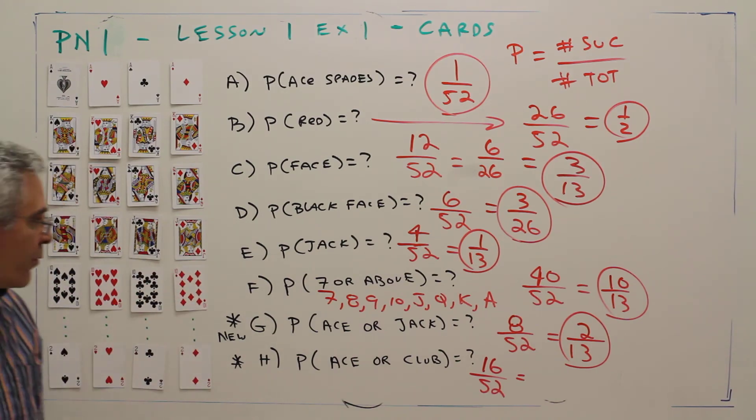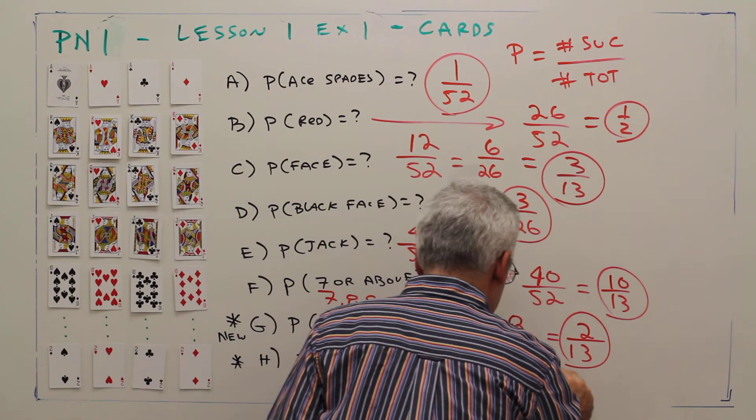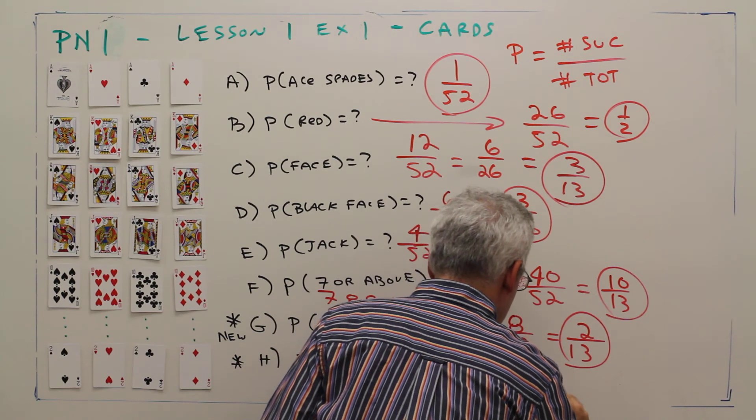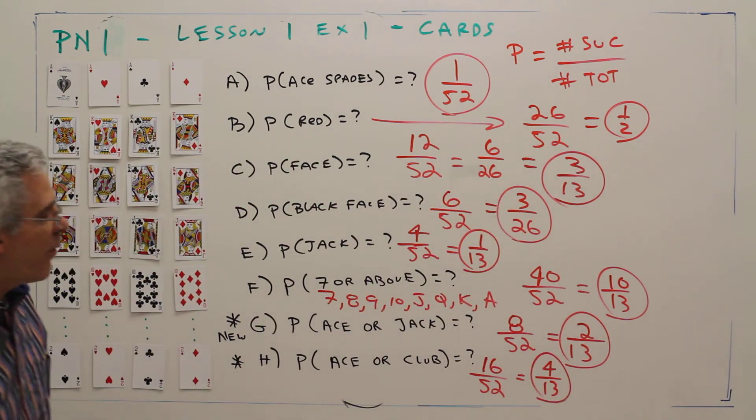I could divide through by 4 and get 4 over 13.